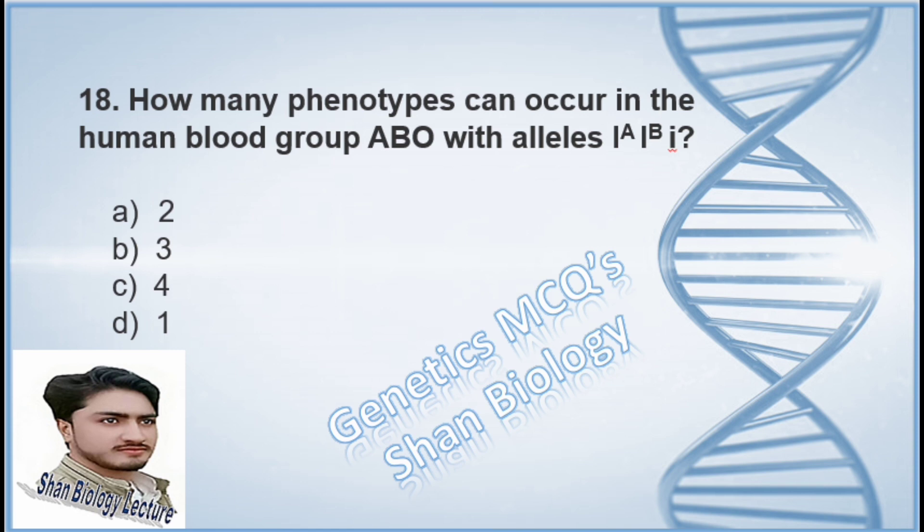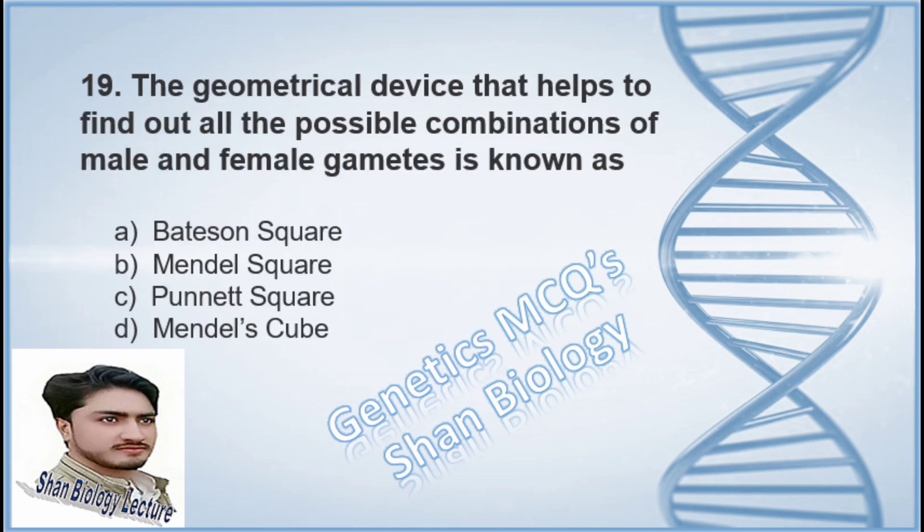Question 18: How many phenotypes can occur in the human blood group ABO with alleles IA, IB, and i? Option A two, option B three, option C four, option D one. The correct option is C, four. Question 19: The geometrical device that helps find out the possible combinations of male and female gametes is known as — option A Bateson square, option B Mendel square, option C Punnett square, option D Mendel's cube.